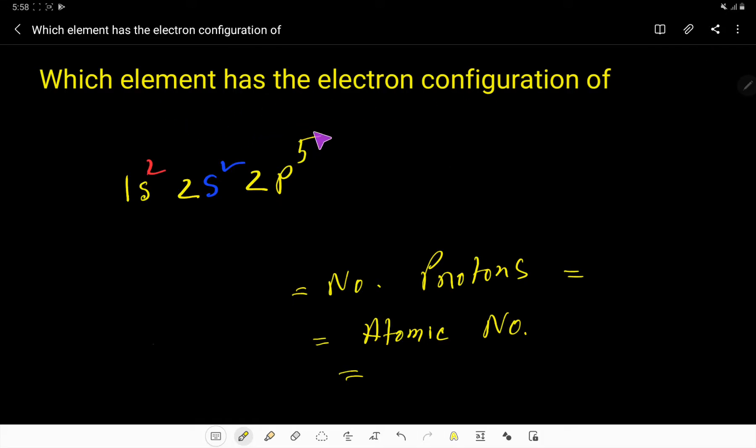Which element has the electron configuration of 1s² 2s² 2p⁵? To find out the name of the element whose electron configuration is this, we first have to count the number of electrons present here.